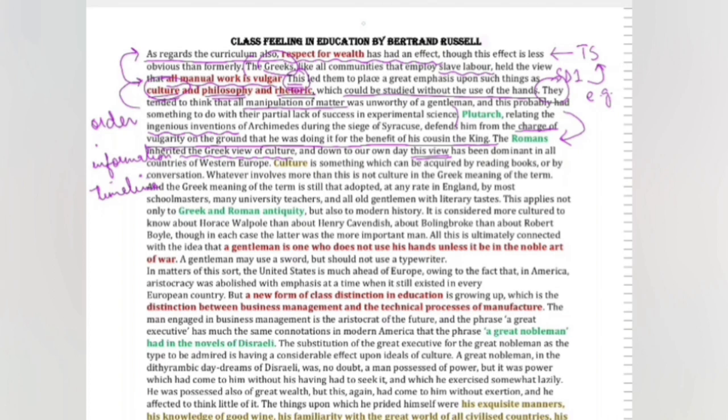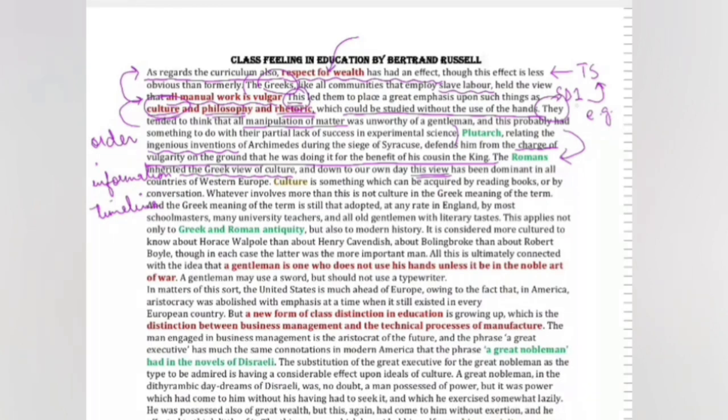I have used different colors in this paragraph to highlight different things. Red color is used in first supporting detail to highlight those ideas that are directly related with the topic sentence. Second supporting detail is comprised of two examples - one is of Plutarch and the other one is of Romans. These two supporting details have been highlighted in green color. I have separated these two examples because they are different from the first example which was directly hitting the topic sentence.